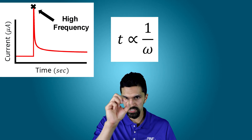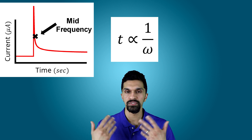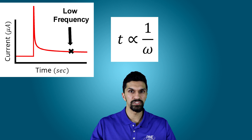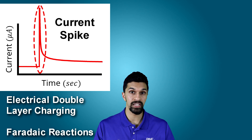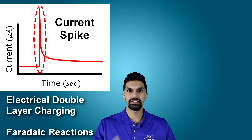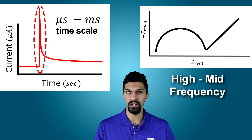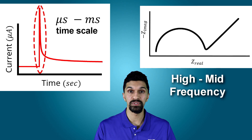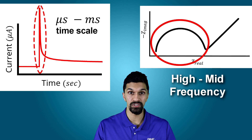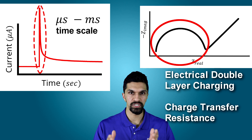With this picture in mind, we can now start to think about and rationalize what is going on in Warburg impedance. We can think about our chronoamperogram as a proxy for our EIS data. Because time is inversely proportional to frequency, we can think about points along our chronoamperogram as different frequencies. For example, the initial spike in the current — associated with electrical double layer charging and some faradaic reactions — is happening on the microseconds to milliseconds timescale, which is the high to mid-frequency region of our Nyquist plot, where we observe a semicircle associated with electrical double layer charging and charge transfer resistance.